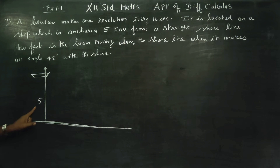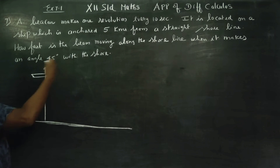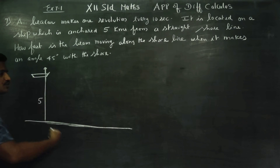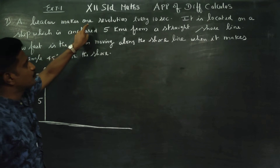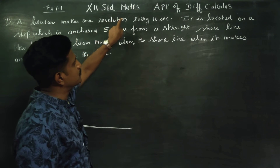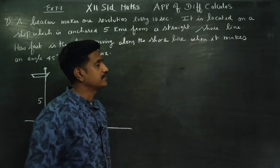First information: the distance from the ship to the shore is 5 kilometers. The beacon is a beam of light. First condition: the beacon makes one revolution every 10 seconds.